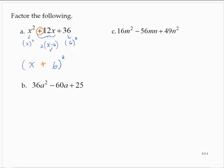Let's look at another one. 36a squared minus 60a plus 25. I notice that the first term is the square of 6a, and the last term is the square of 5.